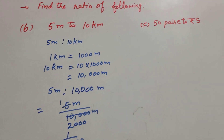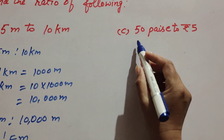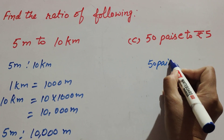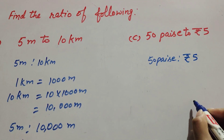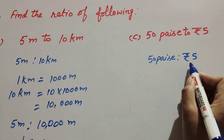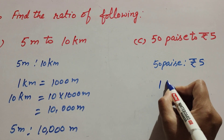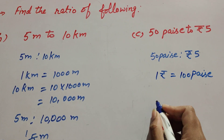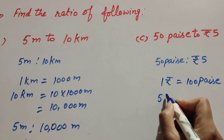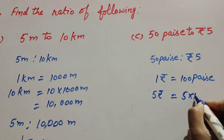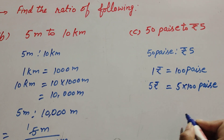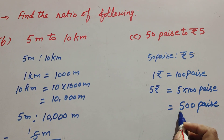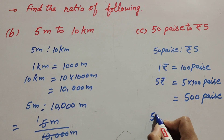Now we move to part C. We find the ratio of 50 paisa to 5 rupees. The units are different — one is paisa and one is rupees — so first we change rupees to paisa. We know 1 rupee equals 100 paisa, so 5 rupees equals 5 multiplied by 100 paisa, which equals 500 paisa.